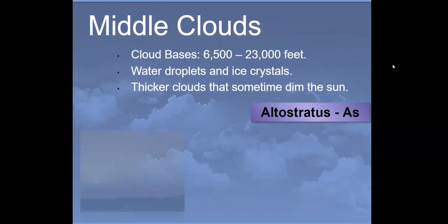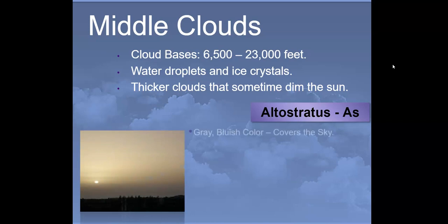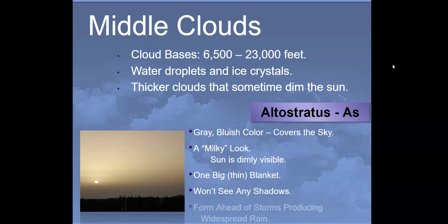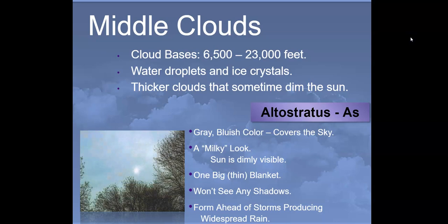The next middle level cloud is altostratus. These come in a blue to gray color and generally cover the entire sky, giving it a milky, watery look. The sun is very dimly visible. When these cover the sky, you won't see any shadows on the ground, and they form ahead of storms that produce widespread rain — so if you've got a day or two of rain coming, you'll generally see altostratus.